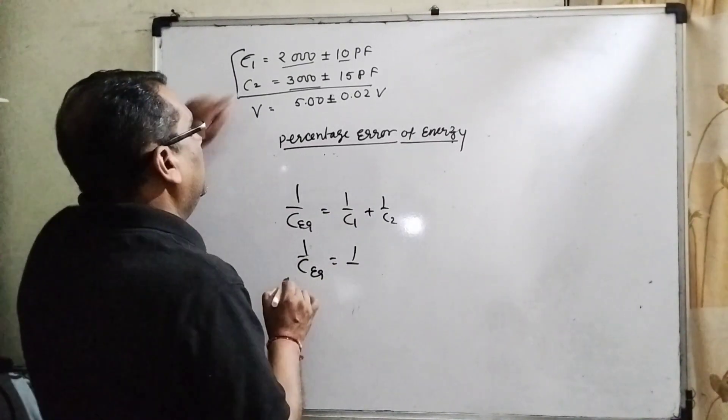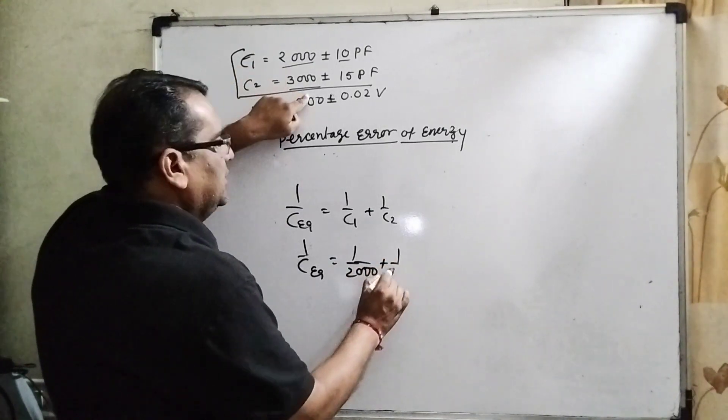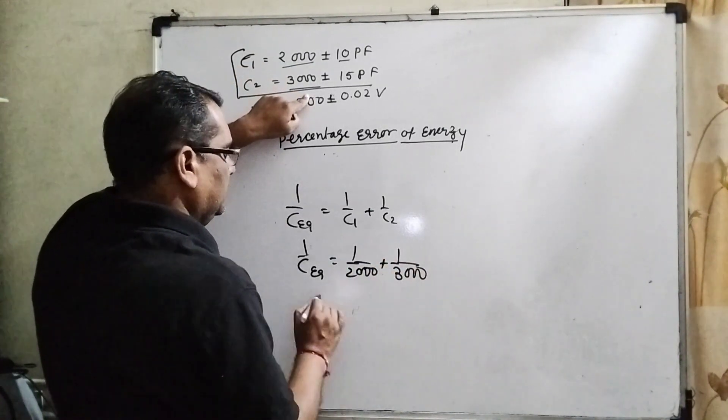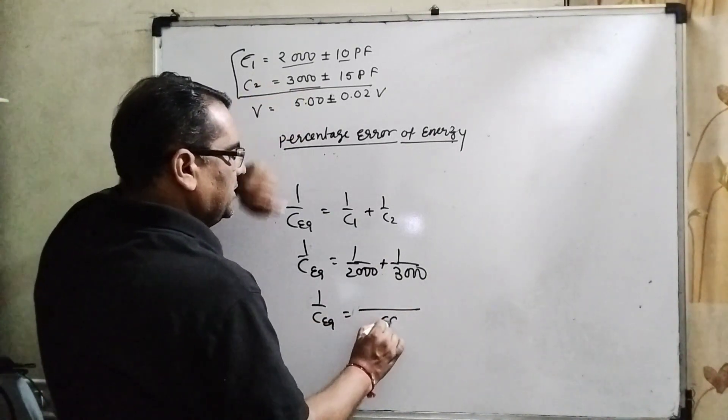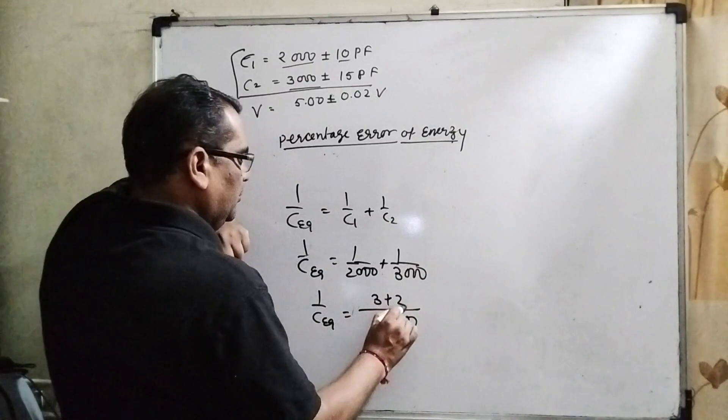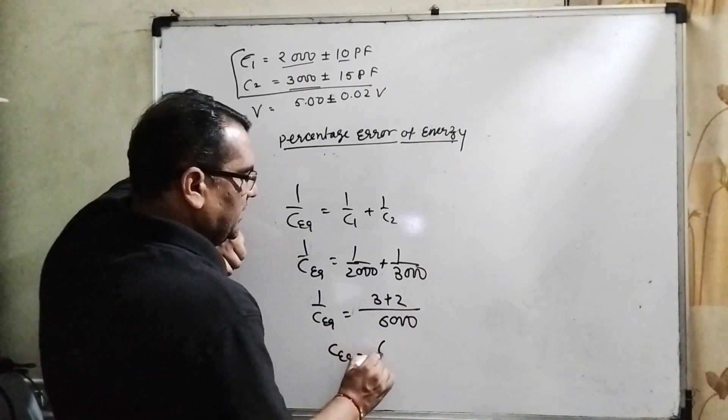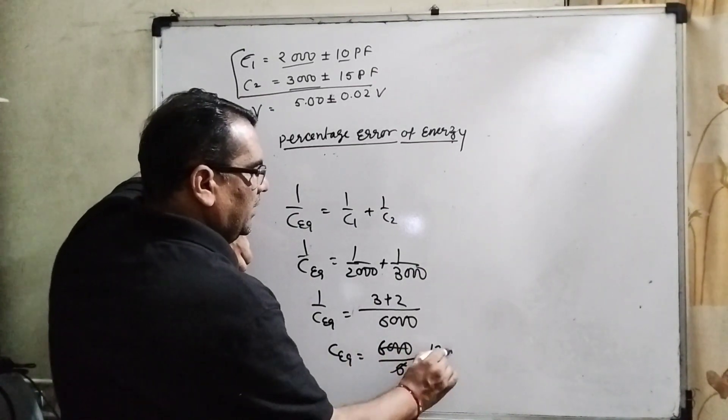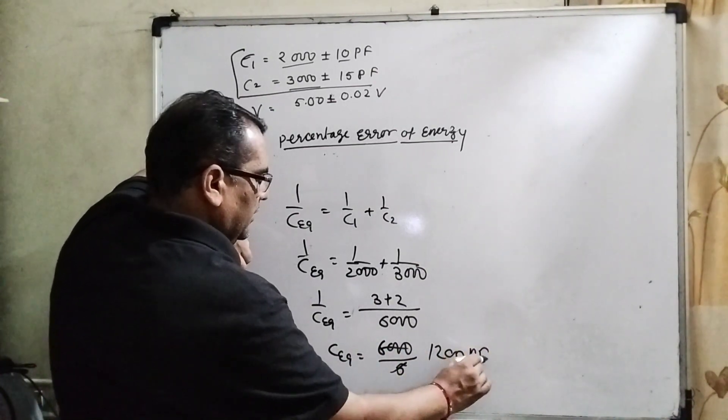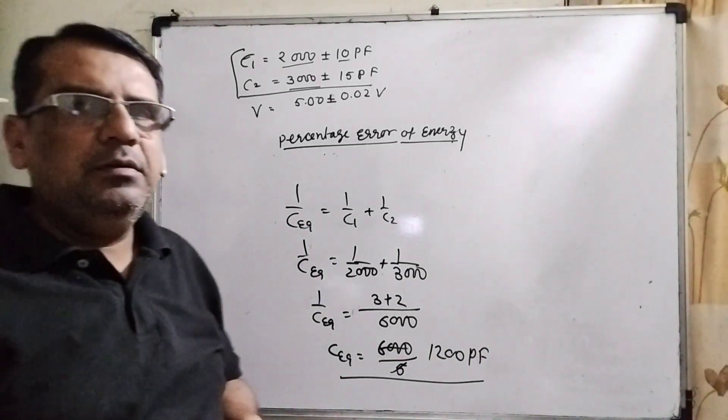Now first find the equivalent value. The real values are 2000 and 3000. Then C_eq equals 6000 divided by 5, which means 1200 picofarad. This is the equivalent capacitance, 1200 picofarad.